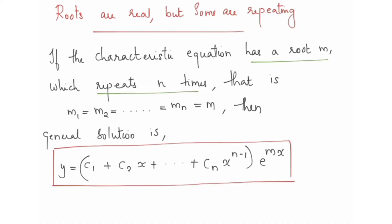If the characteristic equation has a root m which repeats n times, the general solution is y equal to (c1 plus c2·x plus c3·x² plus etc. up to cn·x raised to n-1) into e raised to mx.